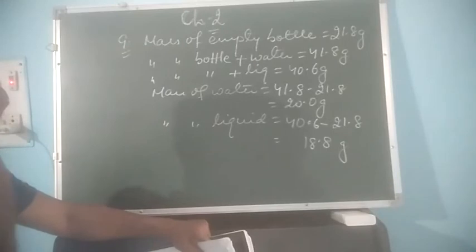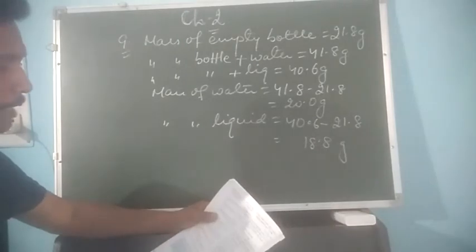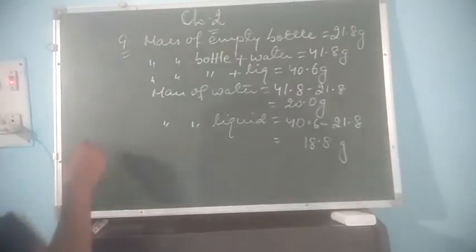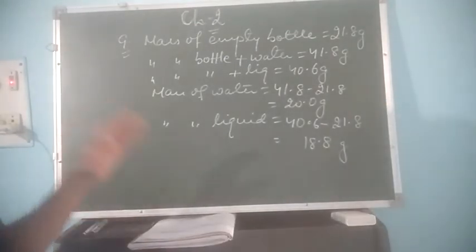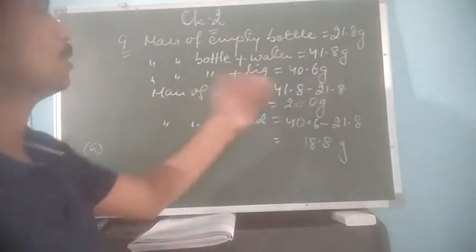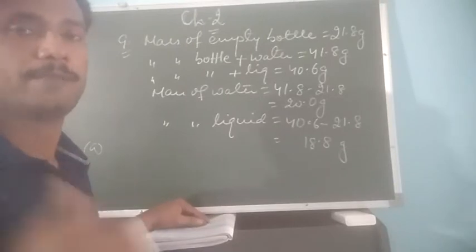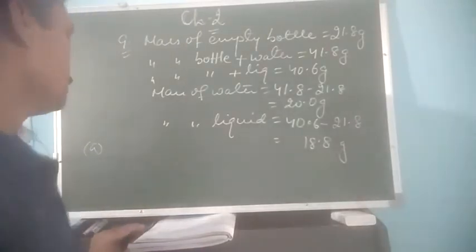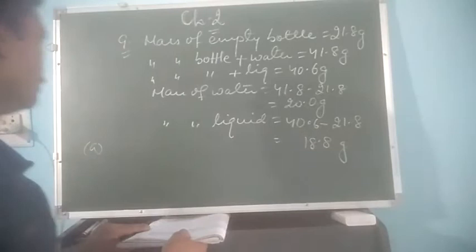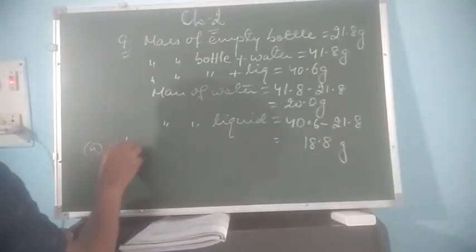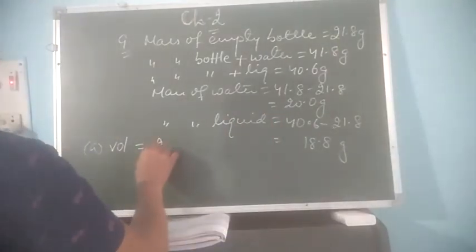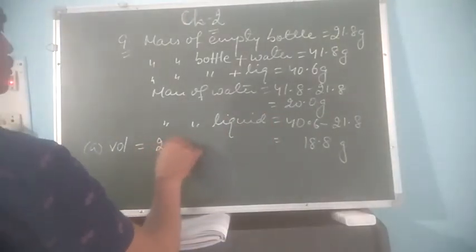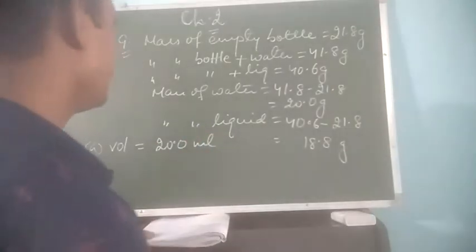Mass of liquid is 18.8 gram. And then you have to find the volume of the density bottle. When the bottle remains the same, we have already studied that whatever the mass of water comes, that can be considered as the volume. So the volume of water is equal to 20.0 millilitre or centimetre cube.